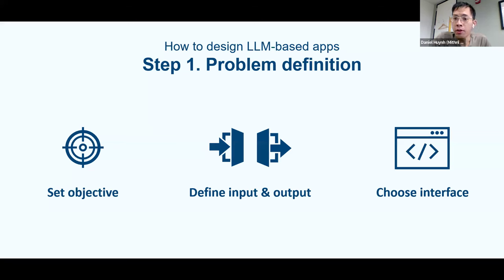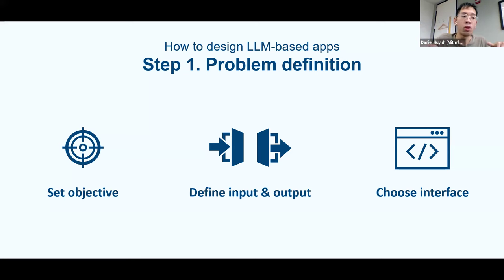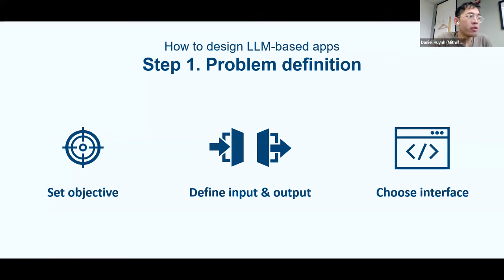It's very important that you think about what you want your system to do and especially what is input-output. An LLM is input text, output text. The question is, how do you formulate your problem in something that is solvable by an LLM? I wanted to take actions on the browser, so the inputs are the HTML of the page and the query, and the output is Selenium code. It's important to decompose your high-level objective into low-level components.